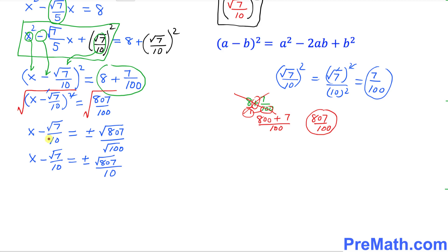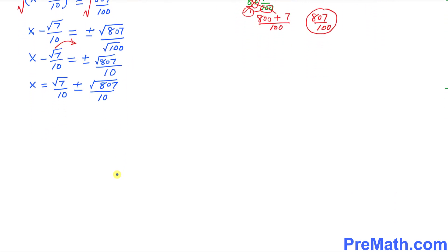Since we want to isolate x, we move the √7/10 fraction to the other side. So x equals √7/10 plus or minus √807/10. Since they share the same denominator, we can write this with a common denominator of 10: x equals (√7 ± √807) / 10.